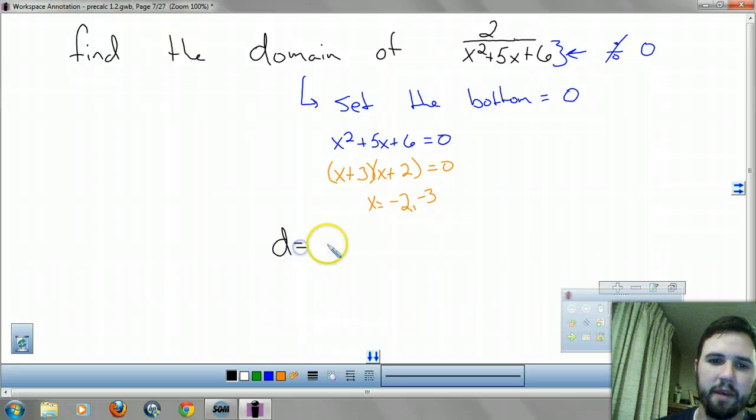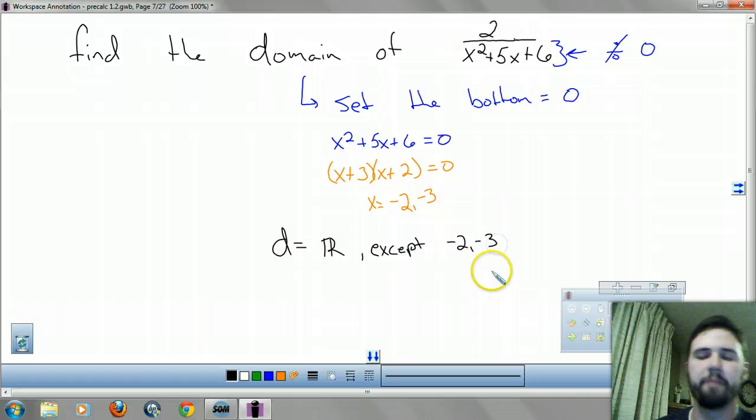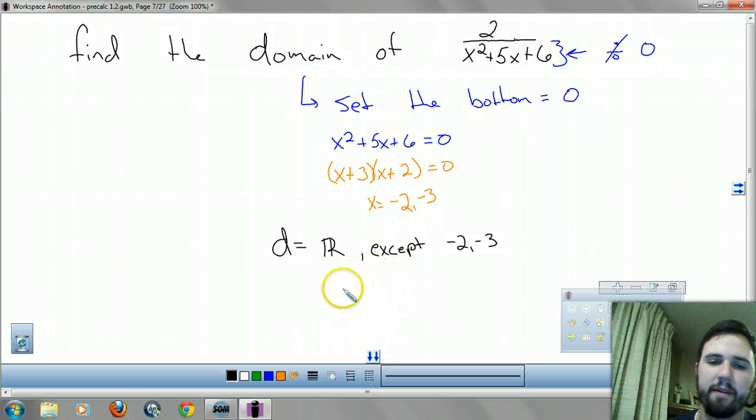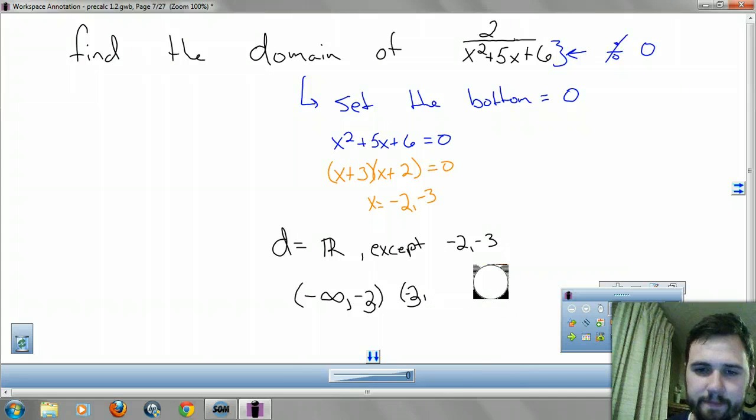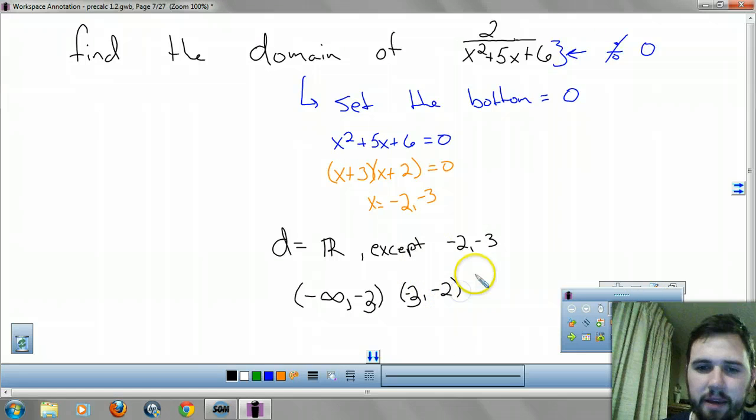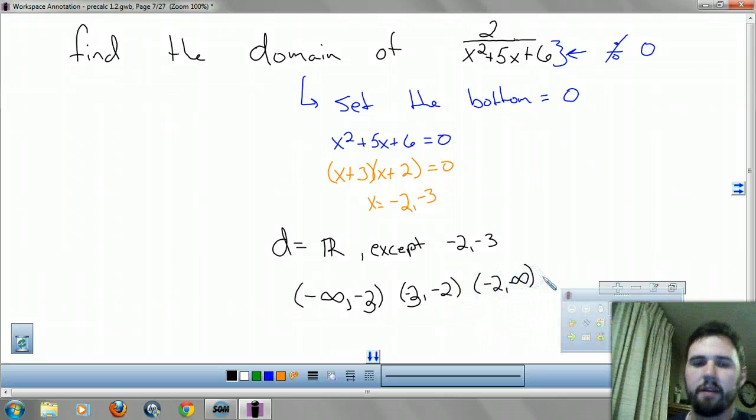So what this tells me is, I'm gonna do this way different than your book does, so bear with me. My domain is all real numbers except negative 2 and negative 3, because all the other numbers work. When you plug those in, you can't divide by 0. If you're putting this in interval notation, bear with me. You go from negative infinity to negative 3, and then you go from negative 3, not including it with parentheses, to negative 2, because negative 3 is less than negative 2. And then you go from negative 2 to infinity, because you have 3 distinct sets here.